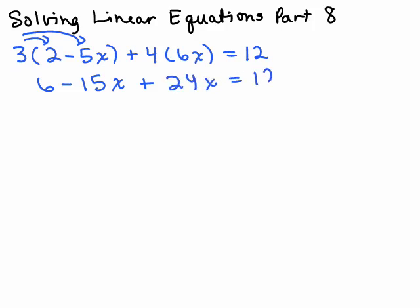The right-hand side is already simplified, so we're going to see if we can add any like terms. We have negative 15x and positive 24x, so 24x minus 15x will be 9x, and then I also have plus six.